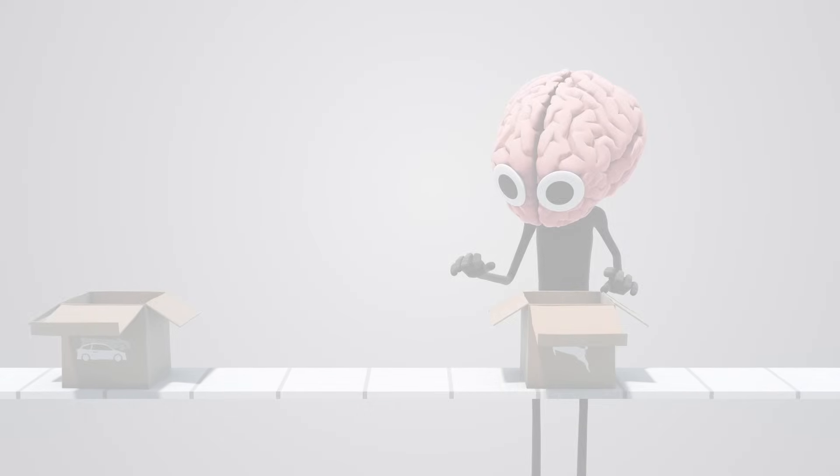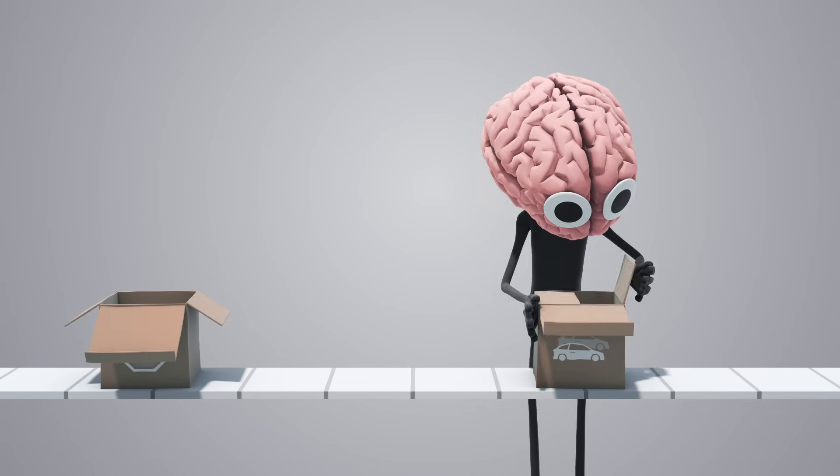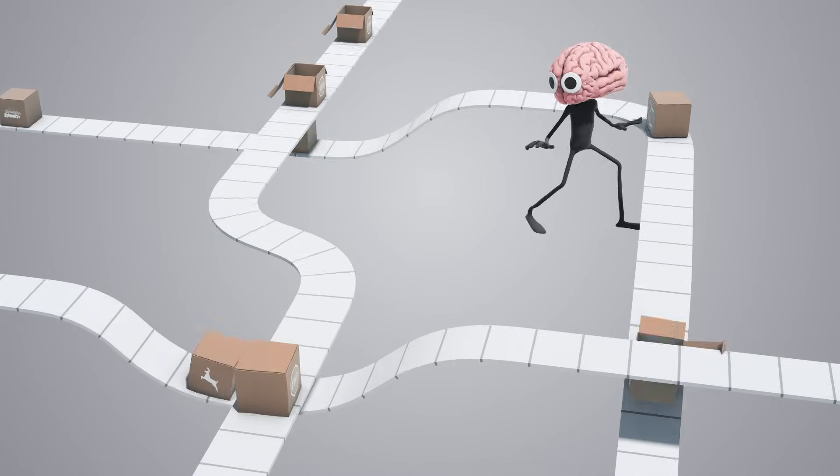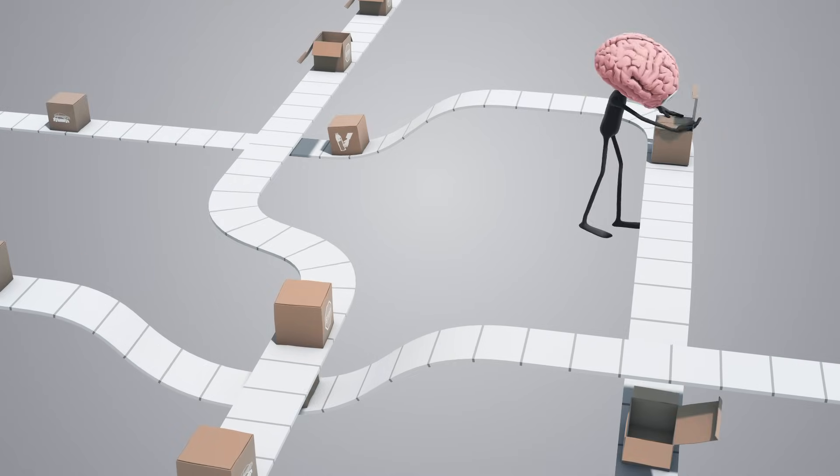Our brain is not wired to pay attention to more than one complex task at a time. What we're actually doing when we think we're multitasking is quickly shifting our focus from one activity to another.